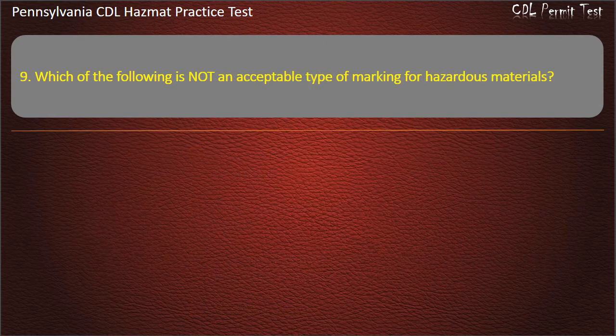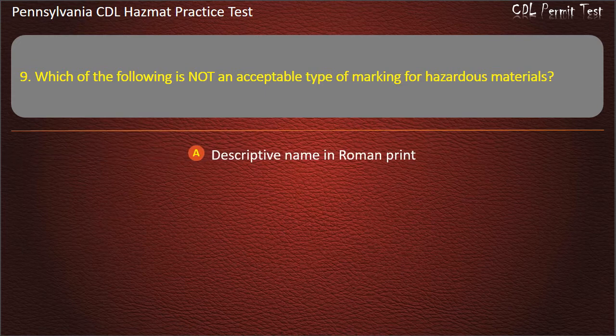Question 9. Which of the following is not an acceptable type of marking for hazardous materials? Options: Descriptive name in roman print; Name in italics.